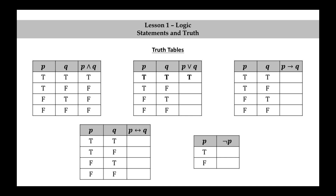For the disjunction: true or true is true, true or false is true, false or true is true, and false or false is false. For the implication: true implies true is true, true implies false is false, false implies true is true.